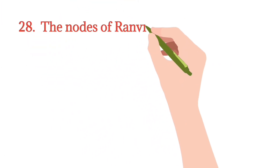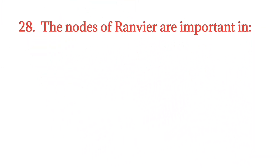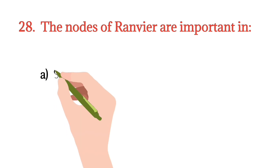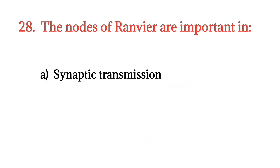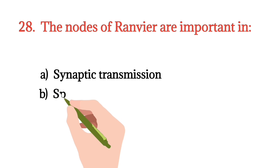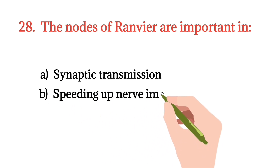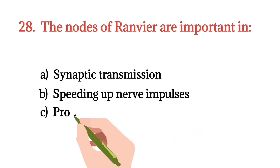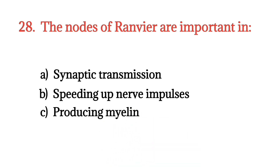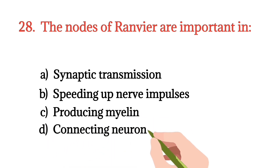MCQ number 28. The nodes of Ranvier are important in? Option A: Synaptic transmission. Option B: Speeding up nerve impulse. Option C: Producing myelin. Option D: Connecting neurons. The right option is Option B.